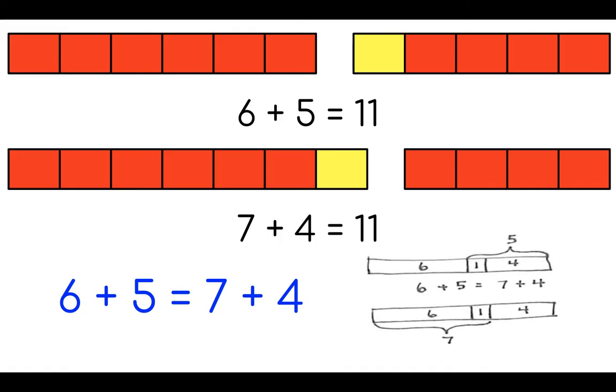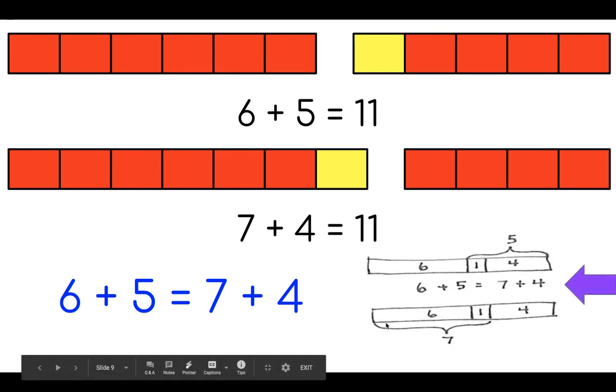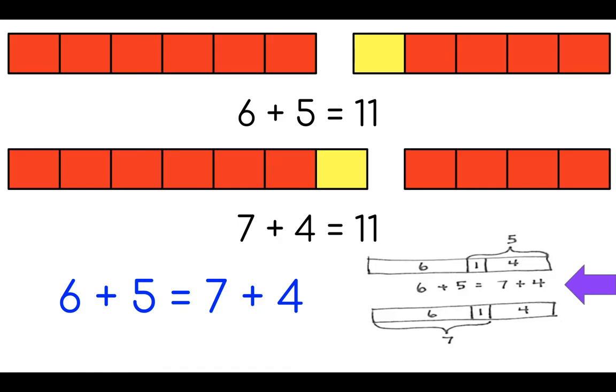It didn't matter which way I slid that yellow linking cube. I still had 11 linking cubes. Let's take a look at a tape diagram. At the top, you can see 6 with 1 and 4, which equals 5. On the bottom, you can see 6 with 1, which was 7, and 4. Regardless of which way we slid that yellow linking cube, we still had the sum of 11. So 6 plus 5 equals 7 plus 4. They were both 11.